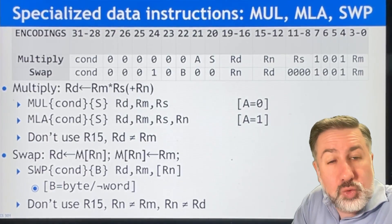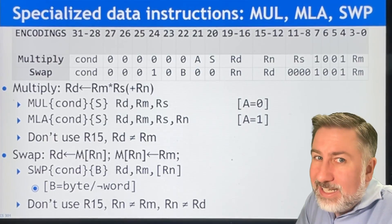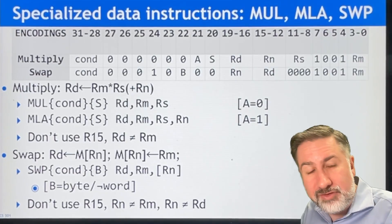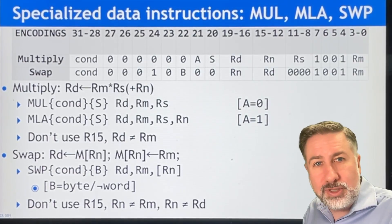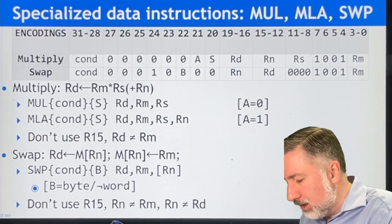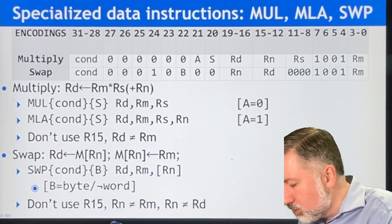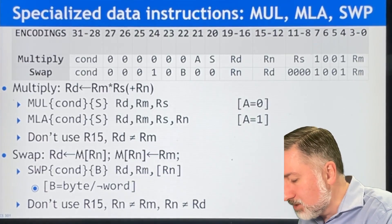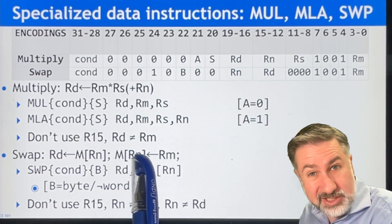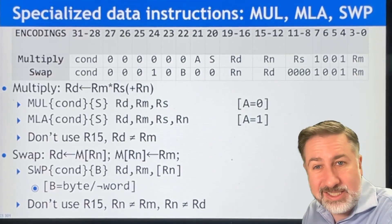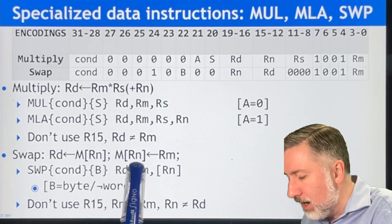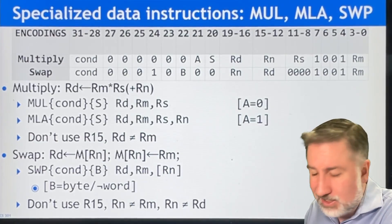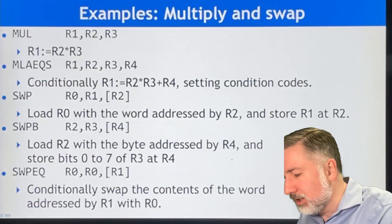Now there are some restrictions on this. You can't swap at the program counter, which makes sense. You don't want to stick the program counter in memory and you don't want to bring some random value in from memory into the program counter. And you can't do it in such a way that the register used for the source into the memory has to be different from the register used for the address for the memory. That address for memory, RN, can't be either the source or the destination of the swap. So we'll get into these in a bit more detail, each one.